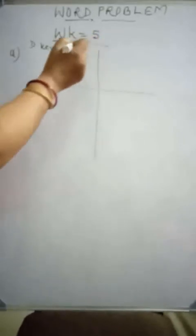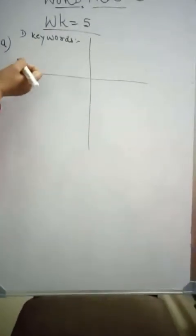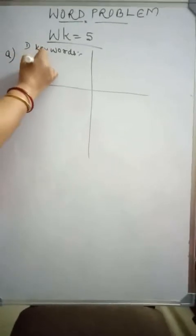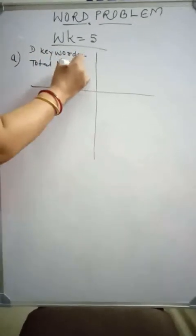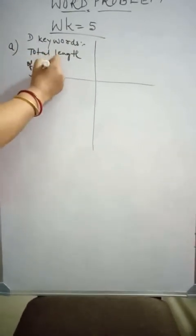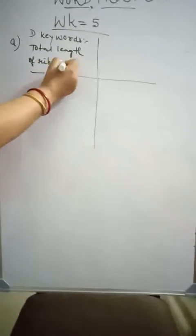Now here, let us draw the 4-square method. First is understanding keywords. So here in this problem, Renu needs 5 pieces of ribbon of length 7.5 cm. What is the total length? The punch line is total length. So here, total length of ribbon. In order to find out the total length of the ribbon, we will do multiplication.